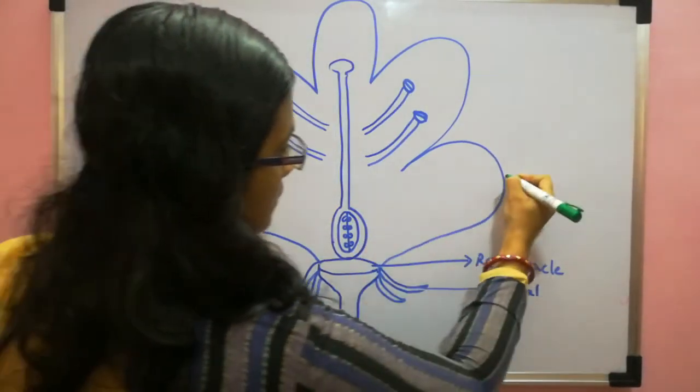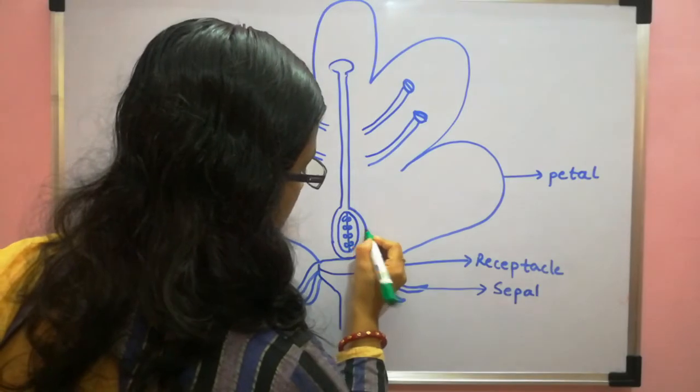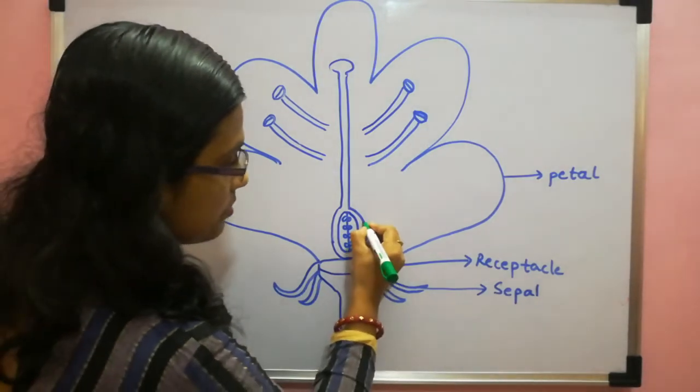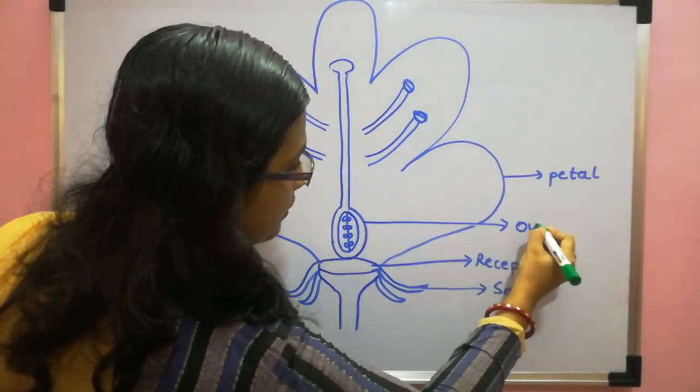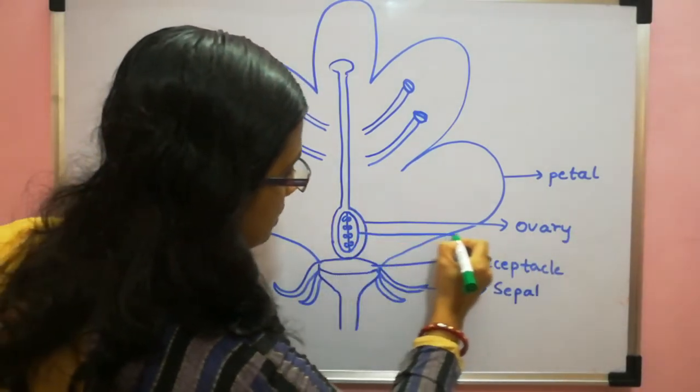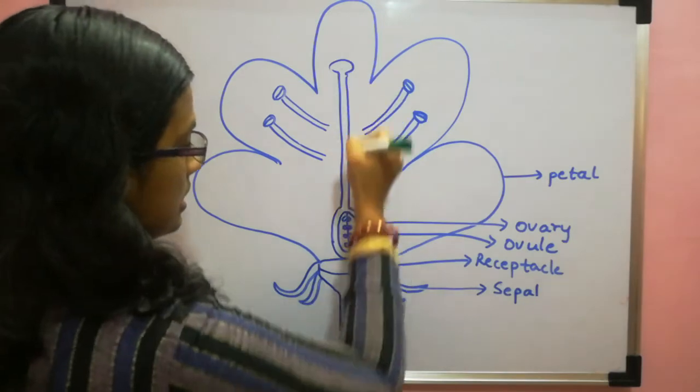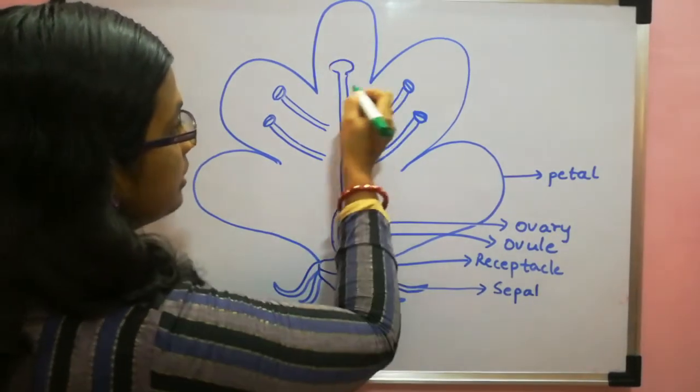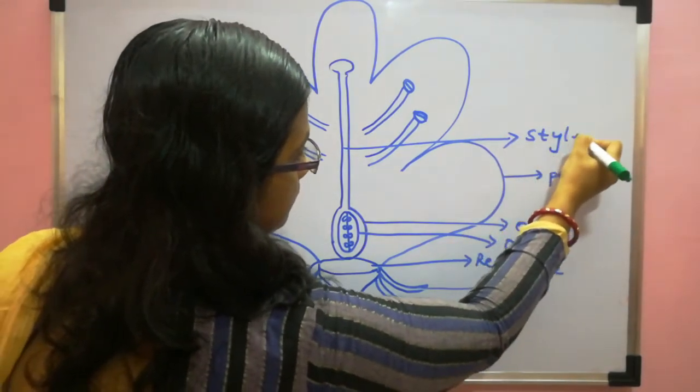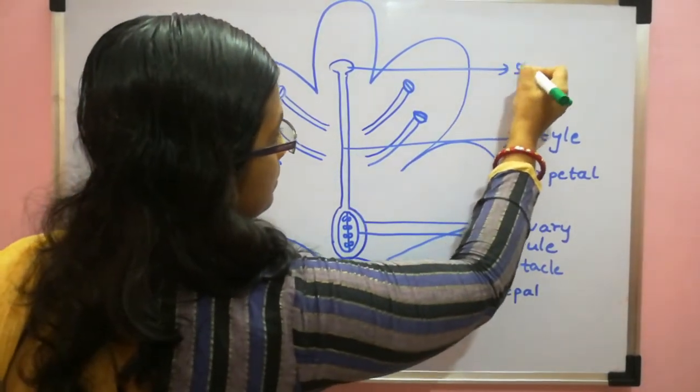Then this one which is a female reproductive structure of the flower. This part is known as ovary. Then inside ovary. Again this circle is ovule. Then this long tube like structure which we have made is style. Over the style. Again this round structure is stigma.